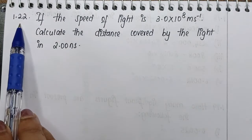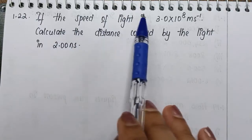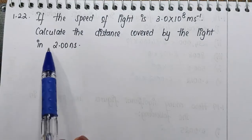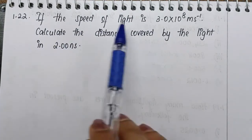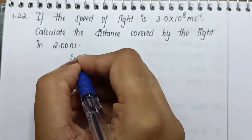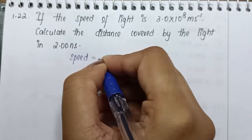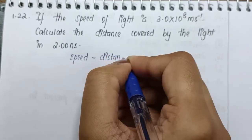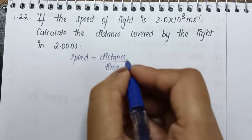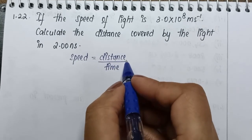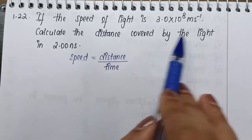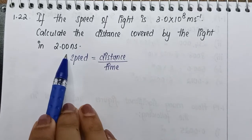Question 1.22: if the speed of light is 3 into 10 to the power 8 meters per second, calculate the distance covered by the light in 2 nanoseconds. For this question, we'll write down the formula for speed: speed is equal to distance by time. We have the speed of light and we need to calculate the distance covered by the light in 2 nanoseconds.